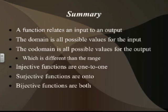For a summary: a function relates an input to an output. The domain is all possible values for the input, and the codomain is all possible values for the output — different from the range, which is the actual output values. An injective (one-to-one) function has a unique output for every input. A surjective (onto) function means for every codomain value y, there is an input x such that f(x) equals y. A bijective function is both one-to-one and onto.